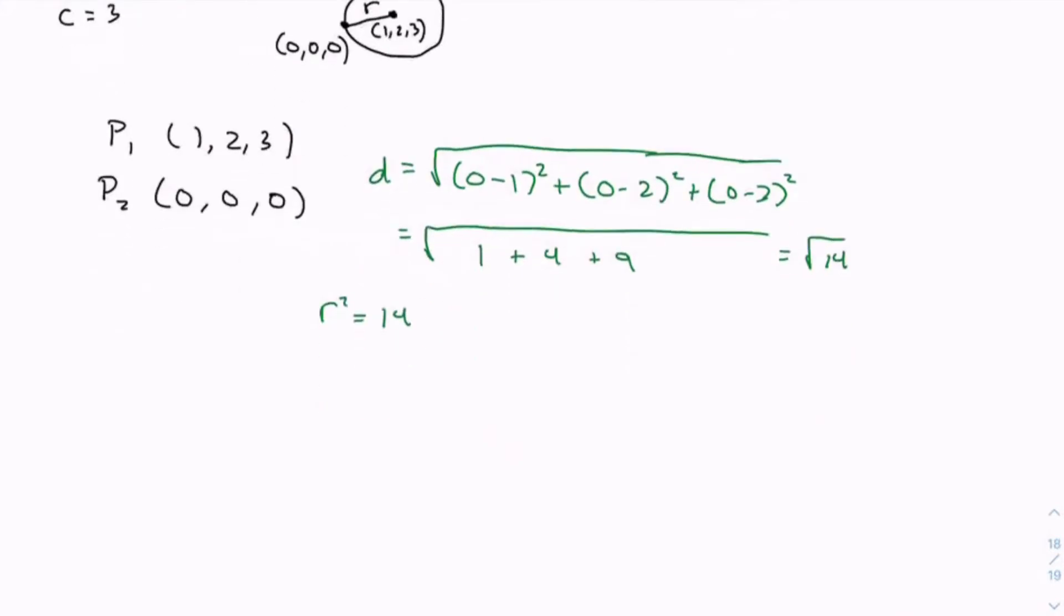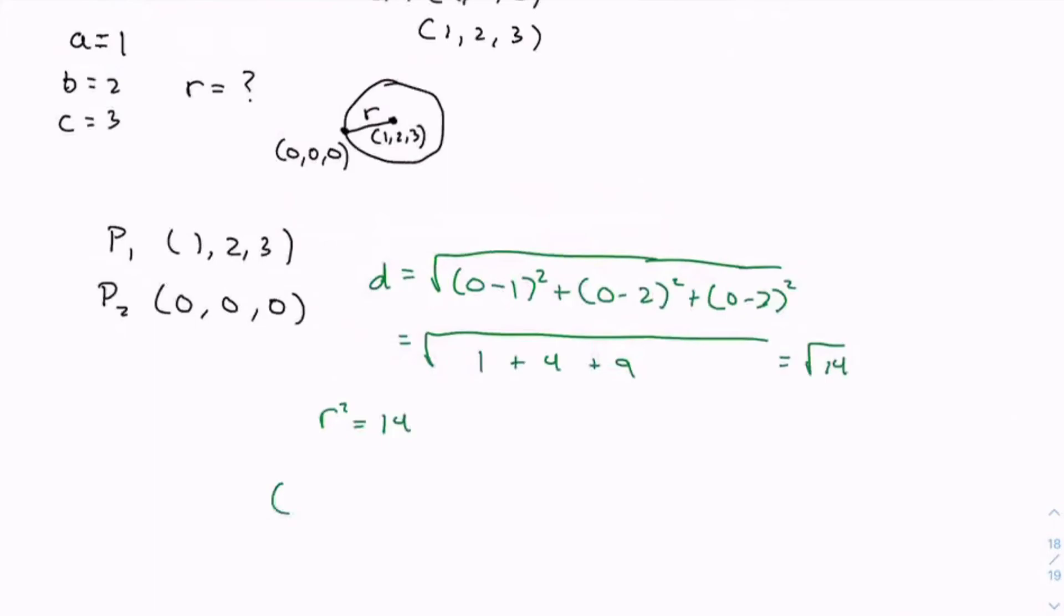So, let's write out the final formula. (x - 1)² + (y - 2)² + (z - 3)² = 14.